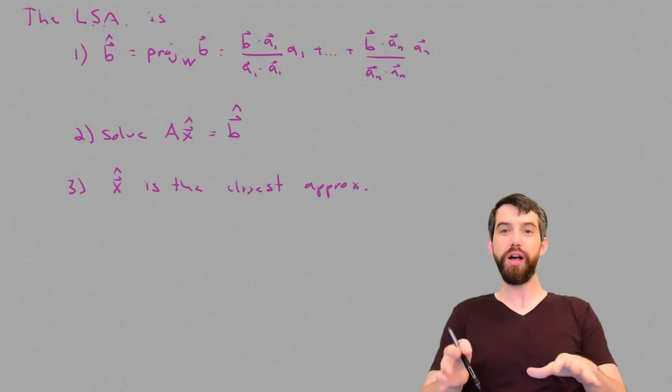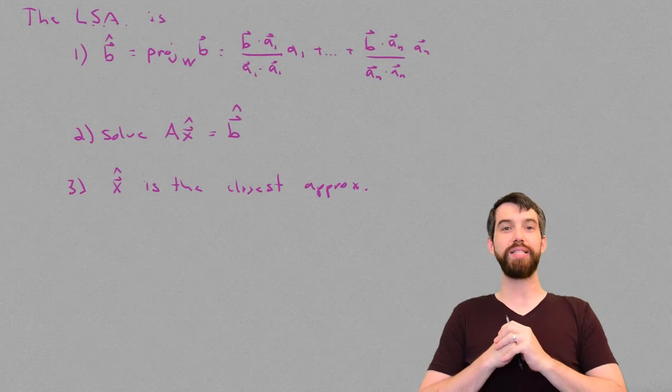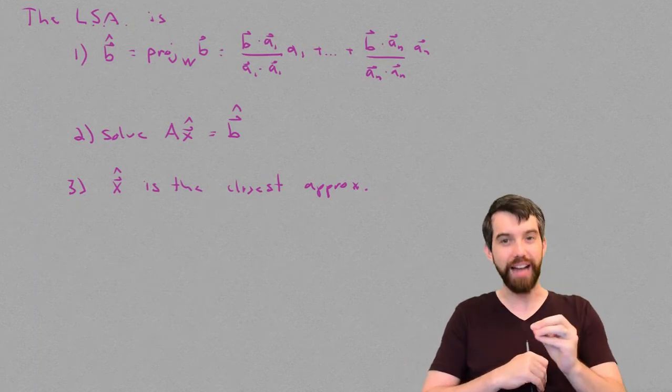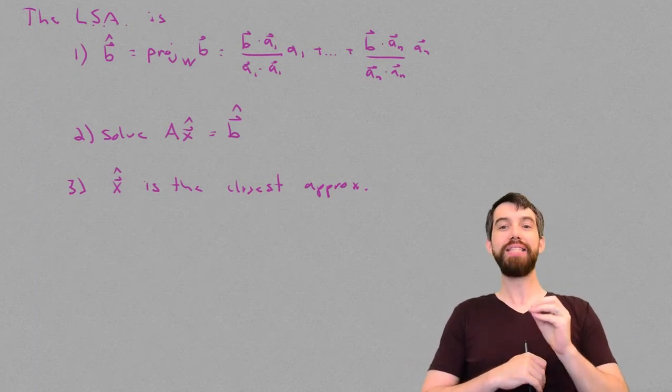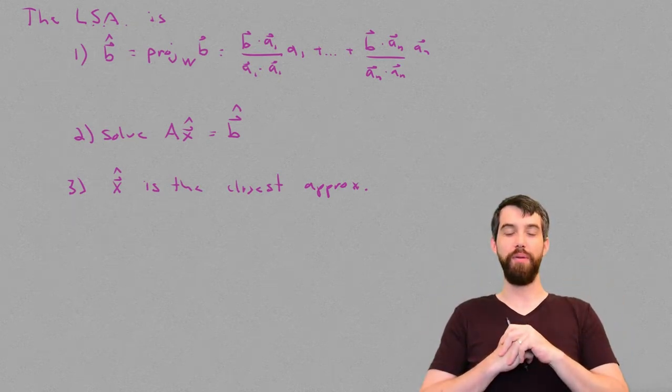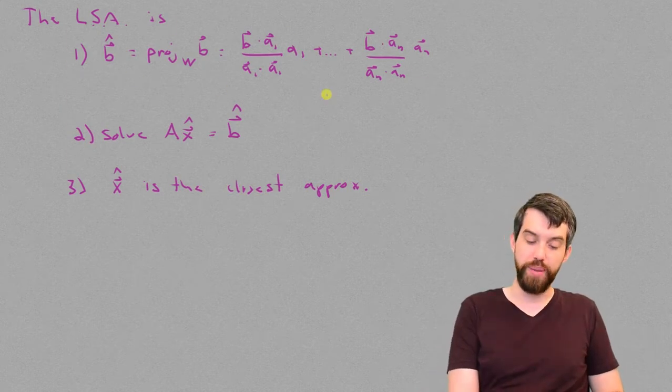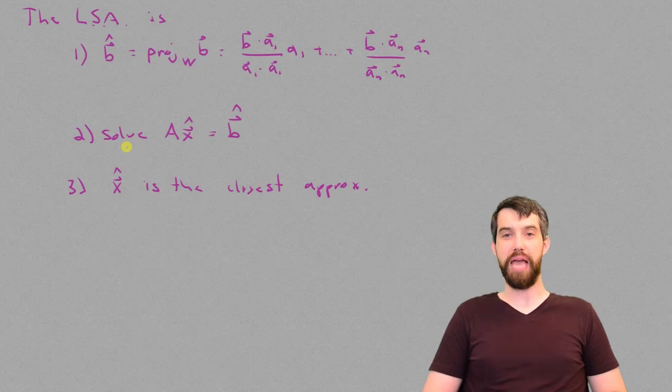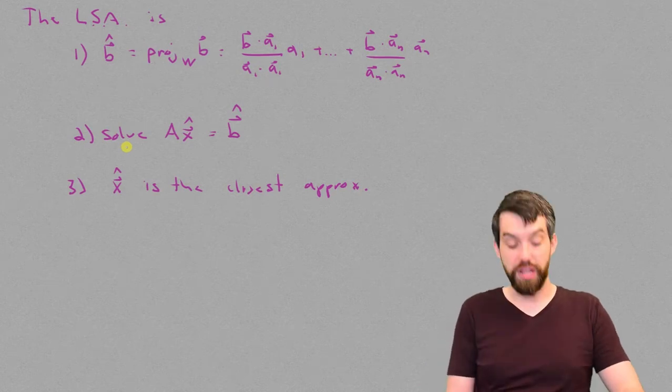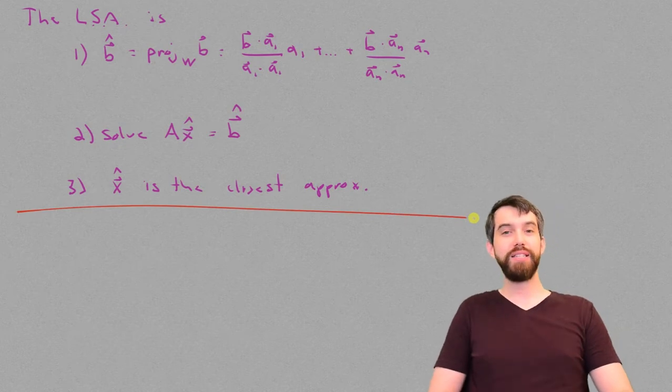In the previous video, we looked at the process to determine the least squares approximation—that is, some vector x̂, such that Ax̂ is as close to the vector b as possible. We figured that the key trick was this orthogonal projection: figure out the b̂ vector, the orthogonal projection, and then solve Ax̂ = b̂. What I want to do in this video is try to find a different and, in fact, simpler way to go through this basic process.